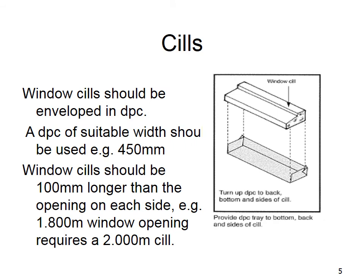Window sills should be enveloped in DPC — the DPC should come up the back, up the sides, and all around the sill. A DPC of suitable width should be used, for example a 450mm DPC.